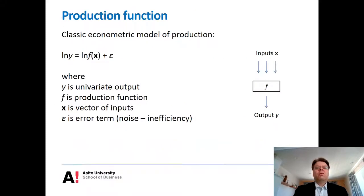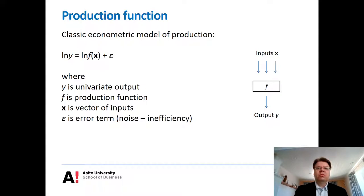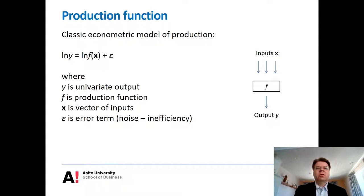Traditionally in economics, production is typically modeled using a production function, which implicitly assumes a single output setting. This is also the setting we started with in our taxonomy of models, and it is the classical SFA approach to modeling. In this theme, we will extend it to multiple outputs, but that's not as straightforward as it might appear. There are several attempts to extend the single-output production function to the multiple-output setting, and there are also some really bad or naive ideas in the literature.